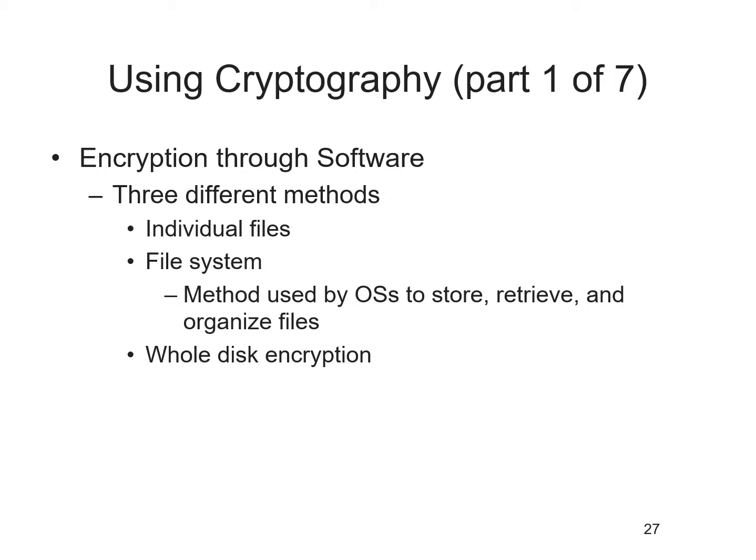There are three ways to perform encryption through software: individual files, file systems, and whole disk encryption. Individual file encryption means encrypting or decrypting files one by one through software. However, this can be a cumbersome process if many files need to be encrypted individually.